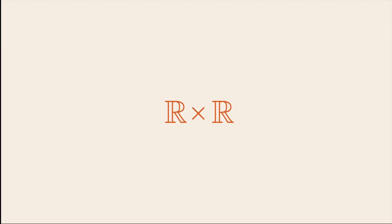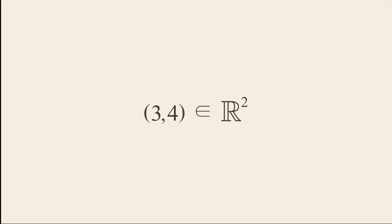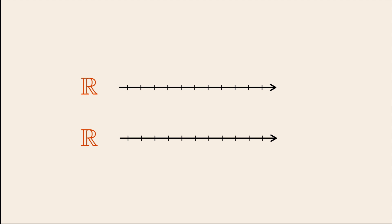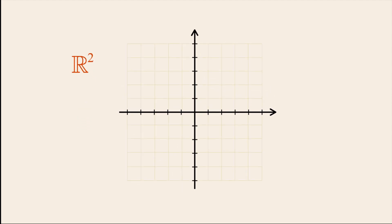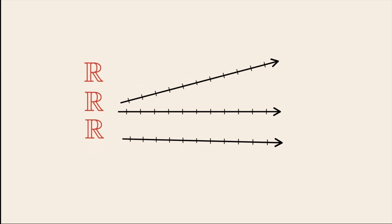However, we are not limited to forming Cartesian products of only two sets of real numbers. We can also form the Cartesian product of three sets to form the set R-three. Just as the set R-two consists of ordered pairs whose elements can be any two real numbers, the set R-three consists of ordered triples whose elements can be any three real numbers. And just as the two-dimensional Cartesian plane was built from two number lines oriented perpendicular to each other, three-dimensional Cartesian space can be created by taking three number lines and orienting all three perpendicular to each other.